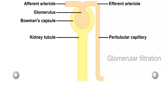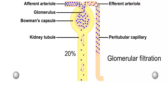Urine formation begins with glomerular filtration. Let the dots represent plasma constituents. Normally about 20% of the plasma that enters the glomerulus is filtered. And the other 80% leaves through the efferent arteriole.